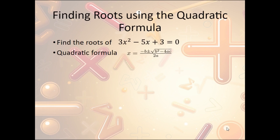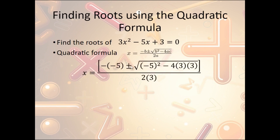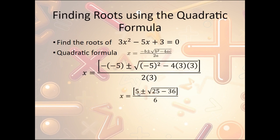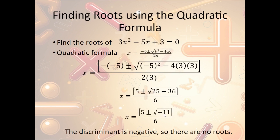One more example: 3x squared minus 5x plus 3 equals zero. Plugging in: negative negative 5 is positive 5, negative 5 squared is 25, and negative 4 times 3 times 3 is negative 36. Over 2 times 3, which is 6. We get 5 plus or minus 25 minus 36 over 6. Combining gives us negative 11 under the radical. Going back to our idea of the discriminant, if there is a negative under the radical, there are no roots — so in this case, there are no roots, or no solutions.